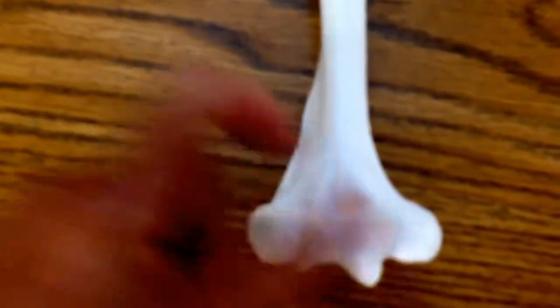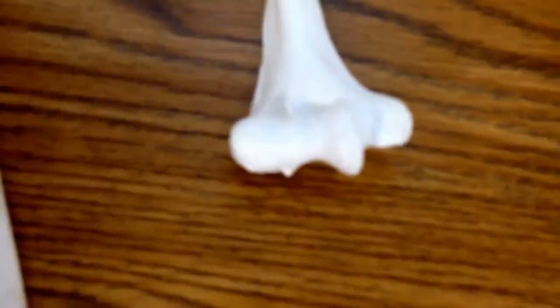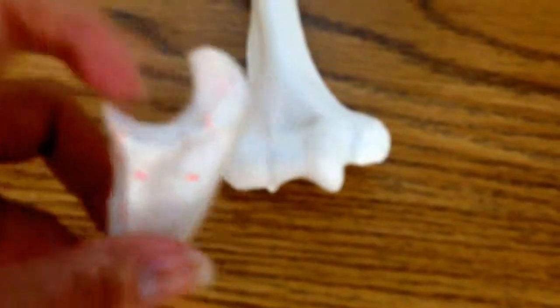The coronoid fossa where the coronoid fits in. We have the trochlea where the trochlear notch is going to fit in.